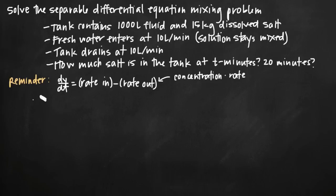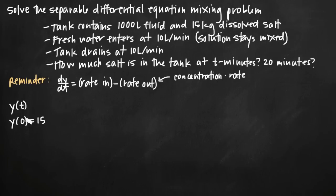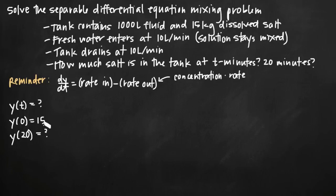We know we start with 15 kilograms of dissolved salt. We'll let y(t) be the function that models the amount of salt in the tank at any given time, with initial condition y(0) = 15. What we're looking to find is y(t) — to model the salt at t minutes — and y(20), the amount after 20 minutes.